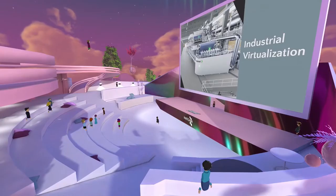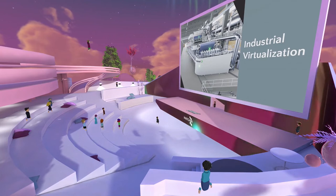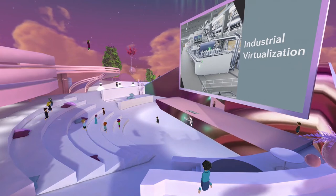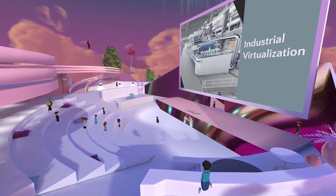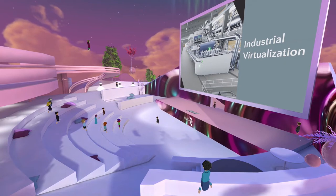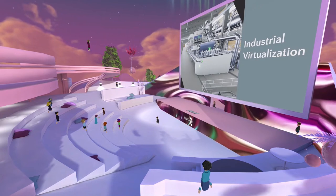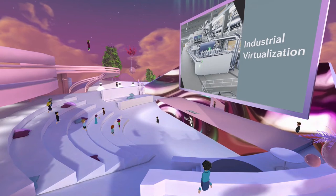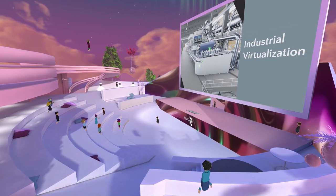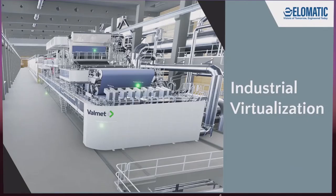The digital twin is supposed to represent a physical machine and tell a story about it. When compared to that control room picture with all those screens, this is a lot more clear on what the information is about. 3D brings information into context. Here you can see the Valmet Virtual Mill model that we created with the Elomatic Visu team, forming the base for virtual solutions around this paper and board production line. We'll explore some of the possibilities with that next, after we see the virtual video.